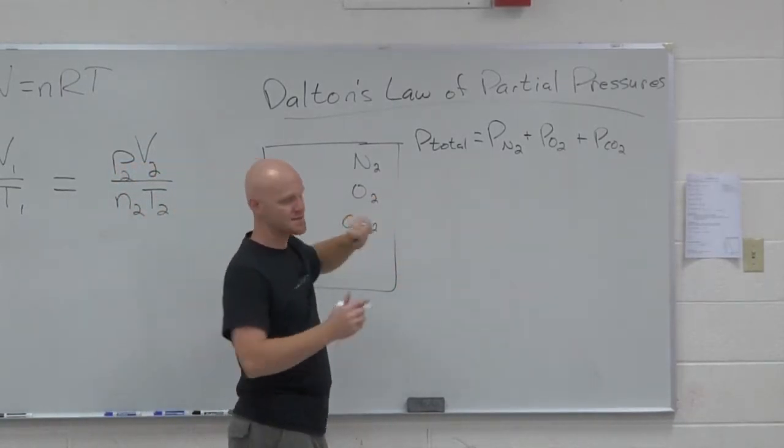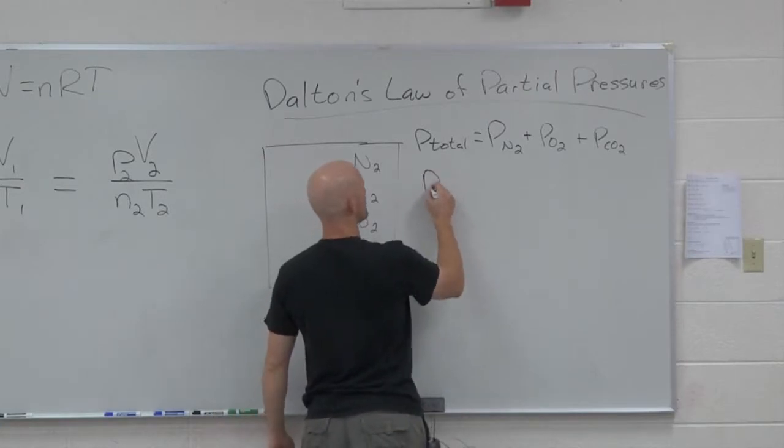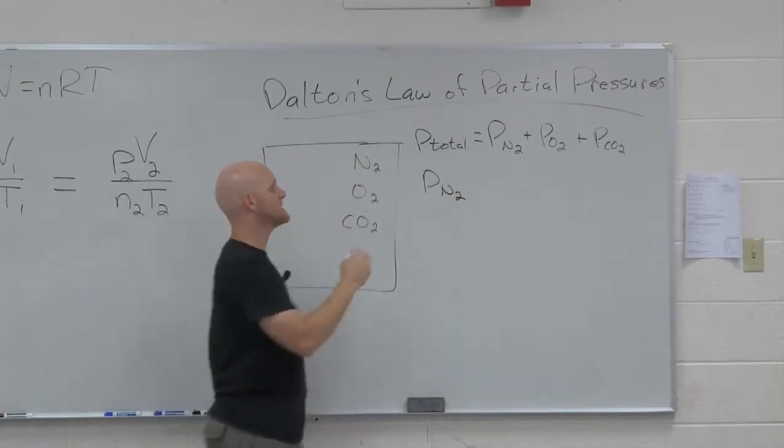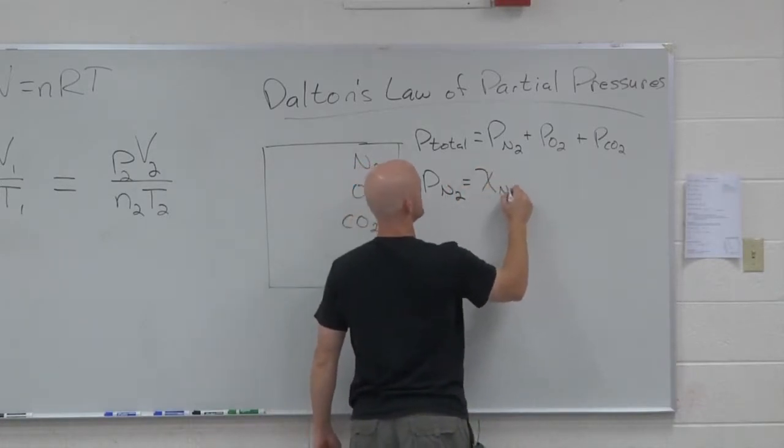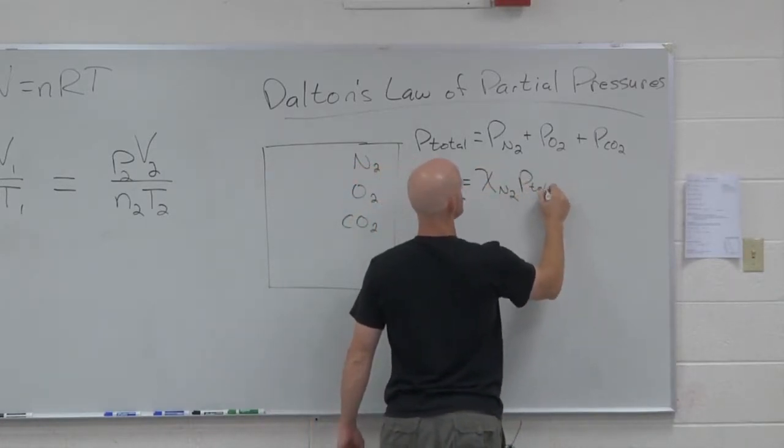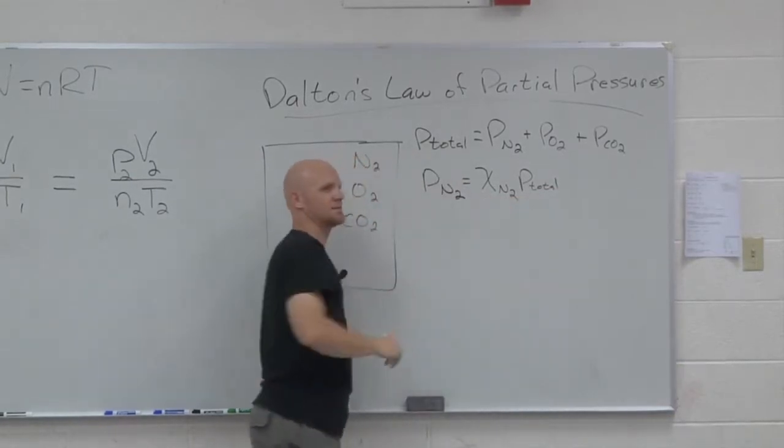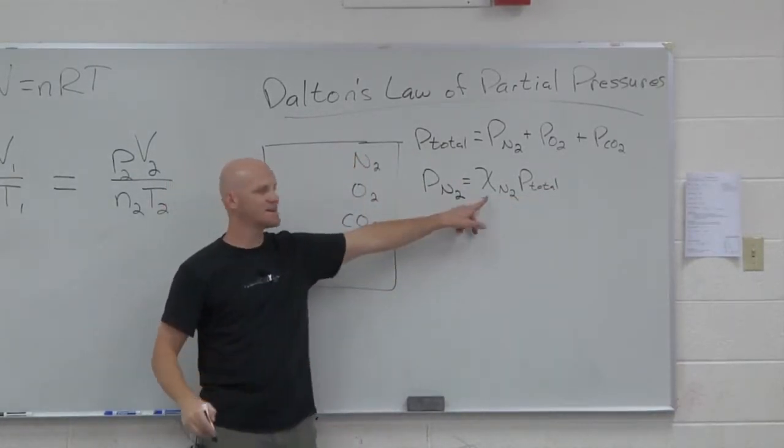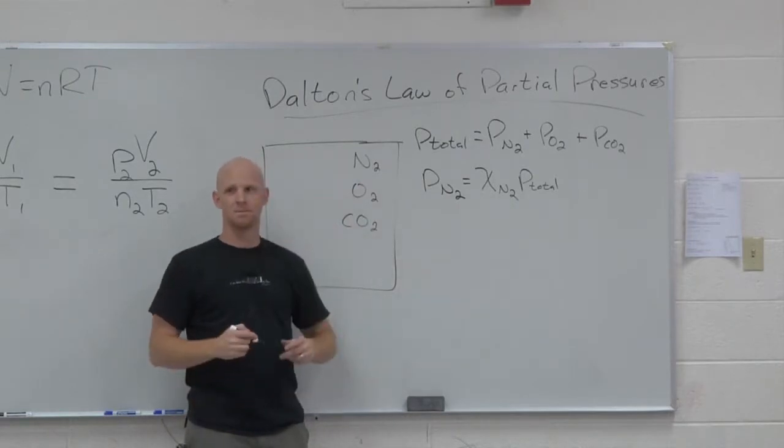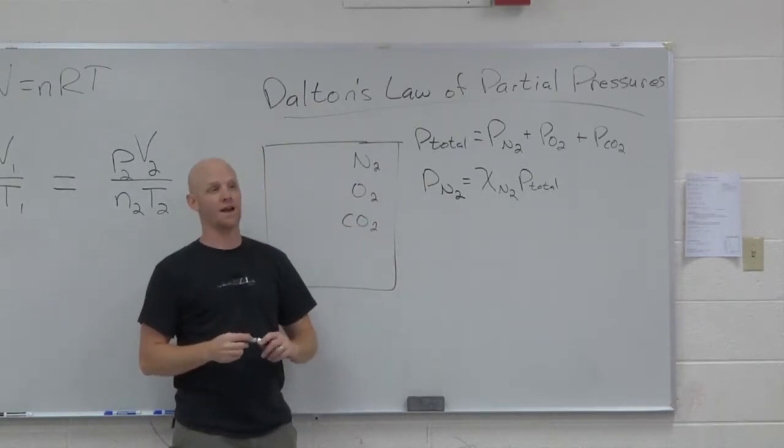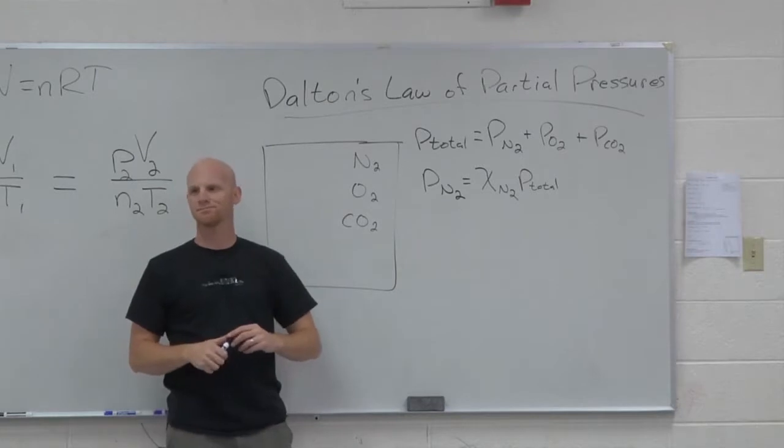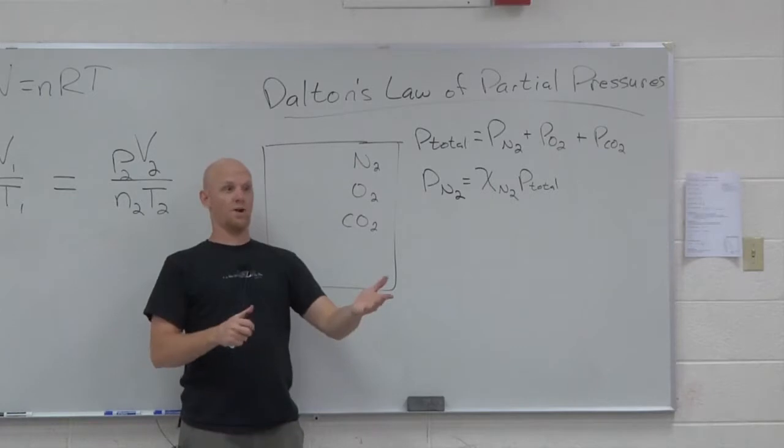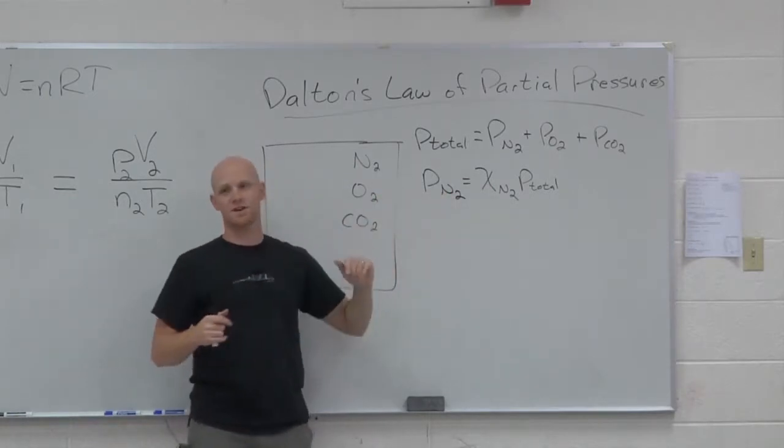The corollary to this is that the partial pressure of any particular gas, and I'll use N2 as a specific example, is equal to this lovely thing times the total pressure. What is that? It's not a letter x, it's the Greek letter chi, but what does it represent? It's mole fraction. What's a mole fraction? How many moles out of the total moles? It's just the fraction of the moles that are N2 in this case.